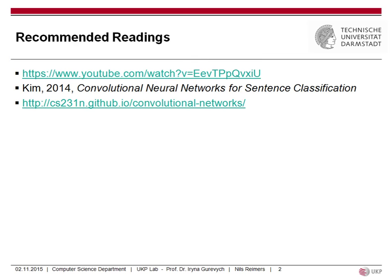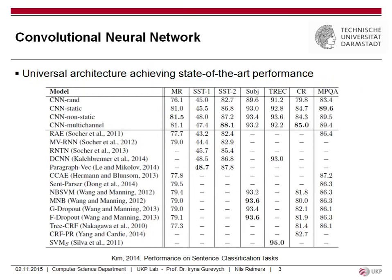Some recommended readings: there's a YouTube video, a paper from Kim, and also a nice write-up about convolutional neural networks from the Stanford CS231 class. Convolutional neural networks are quite universal — an architecture achieving state-of-the-art performance in many tasks. This table from Kim shows performance on sentence classification tasks.